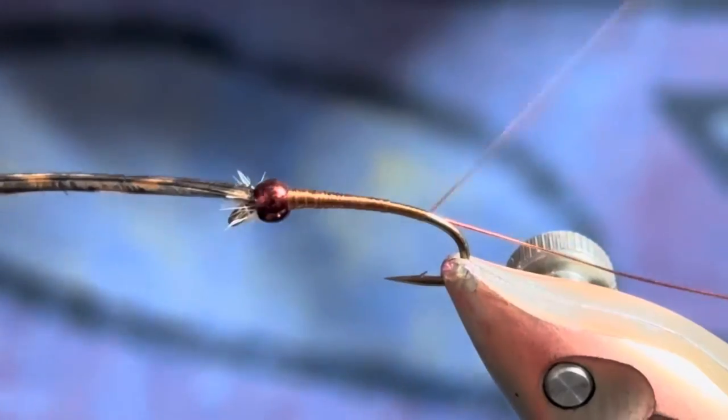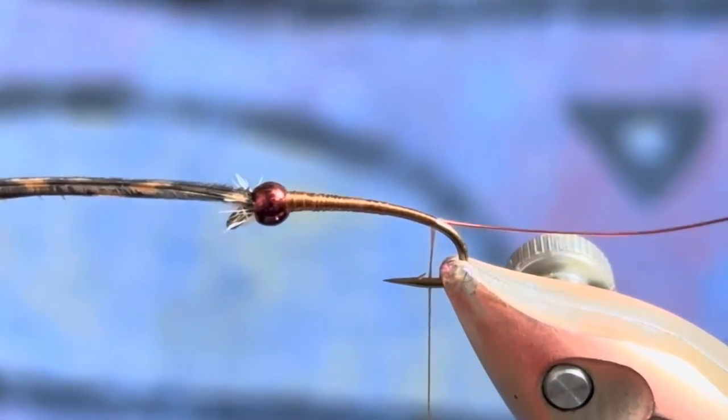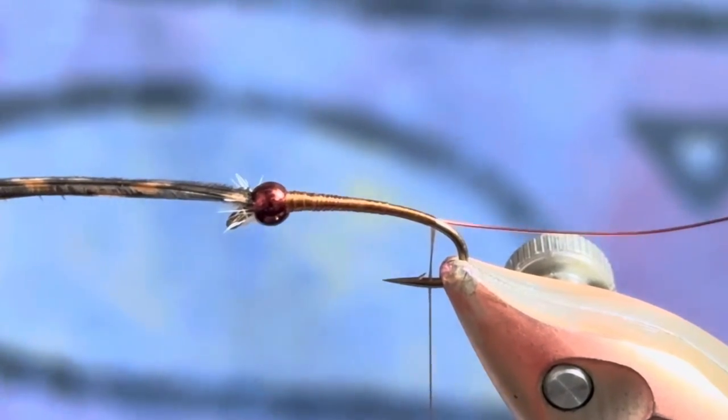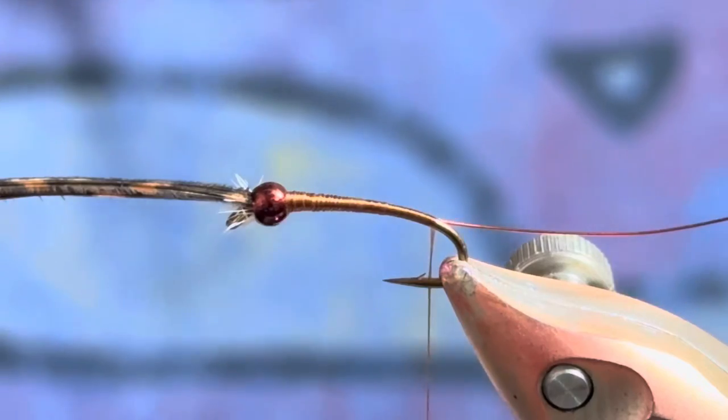So I will grab that wire right in behind the bead and then just wrap it back along the shank and then leave it right about where that barb hangs down.